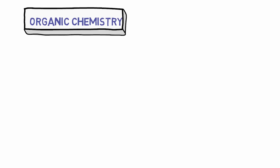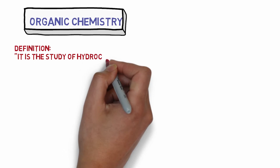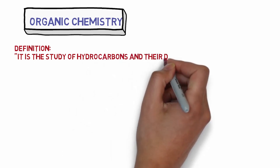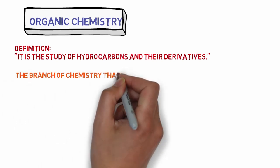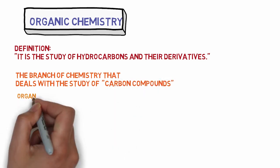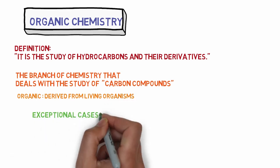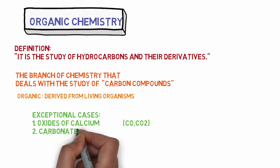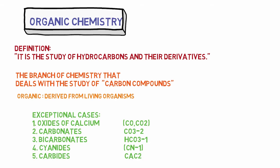Today we are going to have an introductory lesson of organic chemistry. First, we will define what organic chemistry is. It is the study of hydrocarbons and their derivatives. Another definition: it is the branch of chemistry that deals with the study of carbon compounds. The word 'organic' is derived from living organisms. There are some exceptional cases — compounds which contain carbon but are not considered organic compounds.